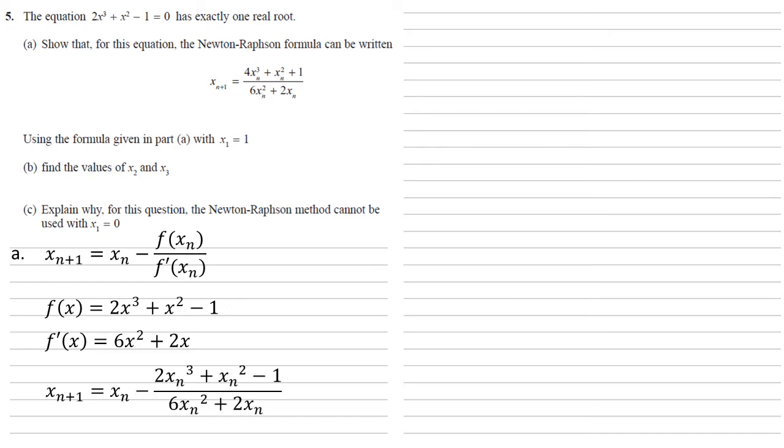Putting these into our formula gives us that x n plus 1 equals x n minus 2x n cubed plus x n squared minus 1 over 6x n squared plus 2x n.